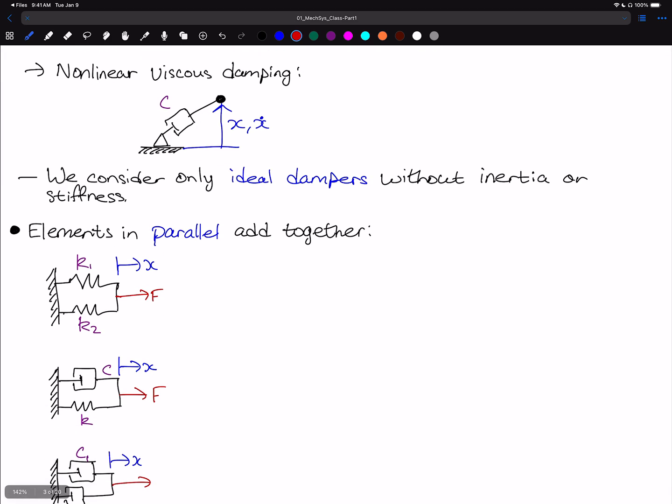Looking at a type of nonlinear viscous damper, this is where you take a dashpot, and rather than exciting it translationally or axially along its axis, we're going to excite it transversely. In this case, I'm not going to go through any of the math here because it ends up being quite intense and not necessarily relevant for the class. You end up with a lot of Pythagorean theorem, and then when you go into Taylor series approximations, as well as maybe binomial expansions, you end up finding that in this case...